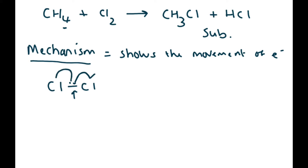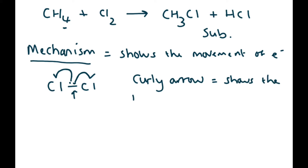When this bond breaks, one electron can go back to one chlorine and one electron can go back to the other chlorine. A curly arrow shows the movement of a pair of electrons — to either form or break a covalent bond.